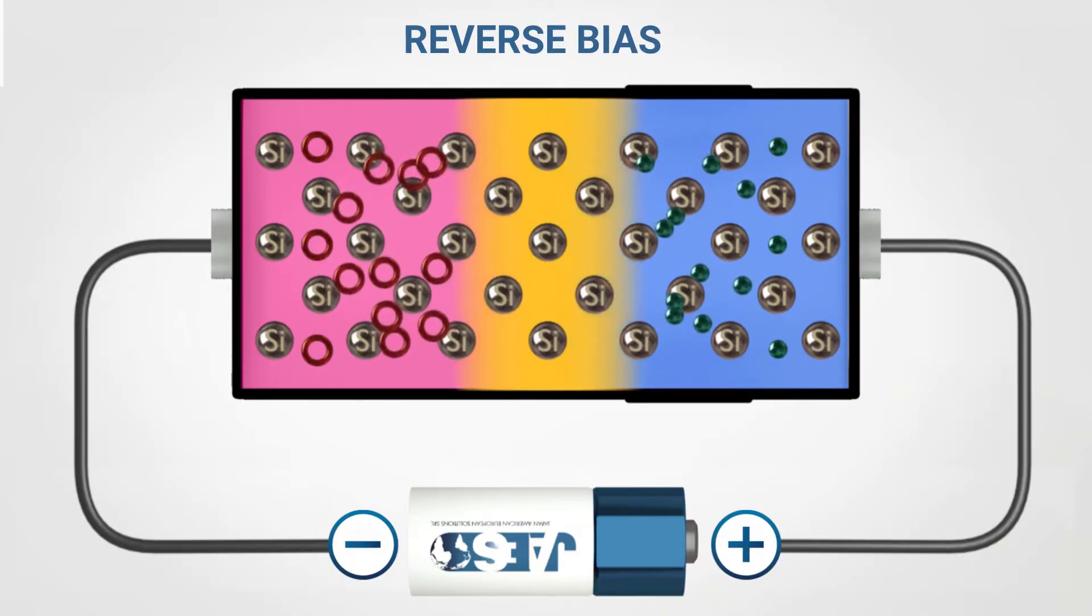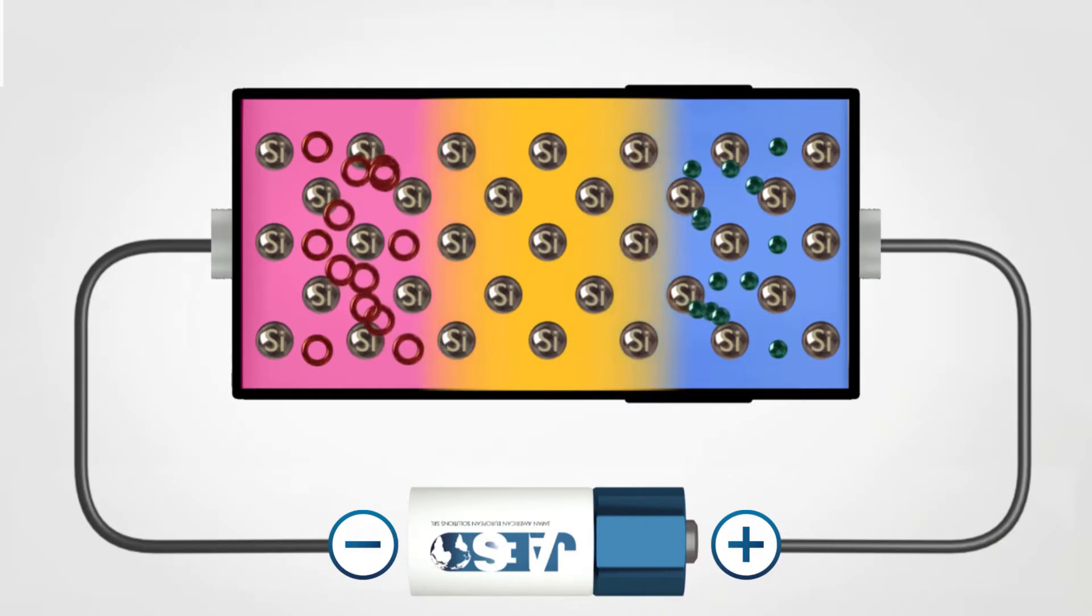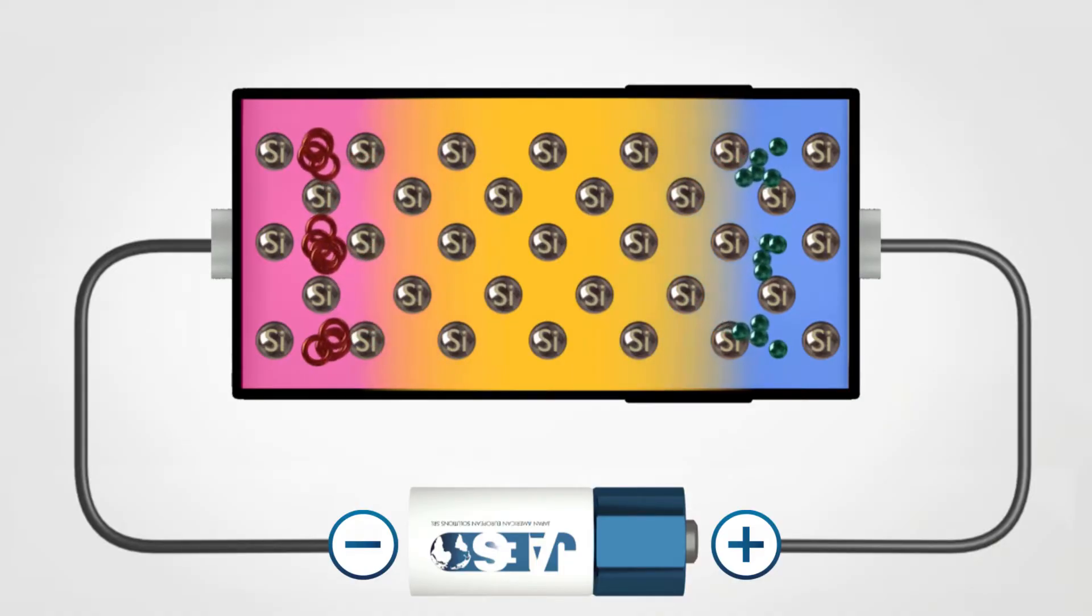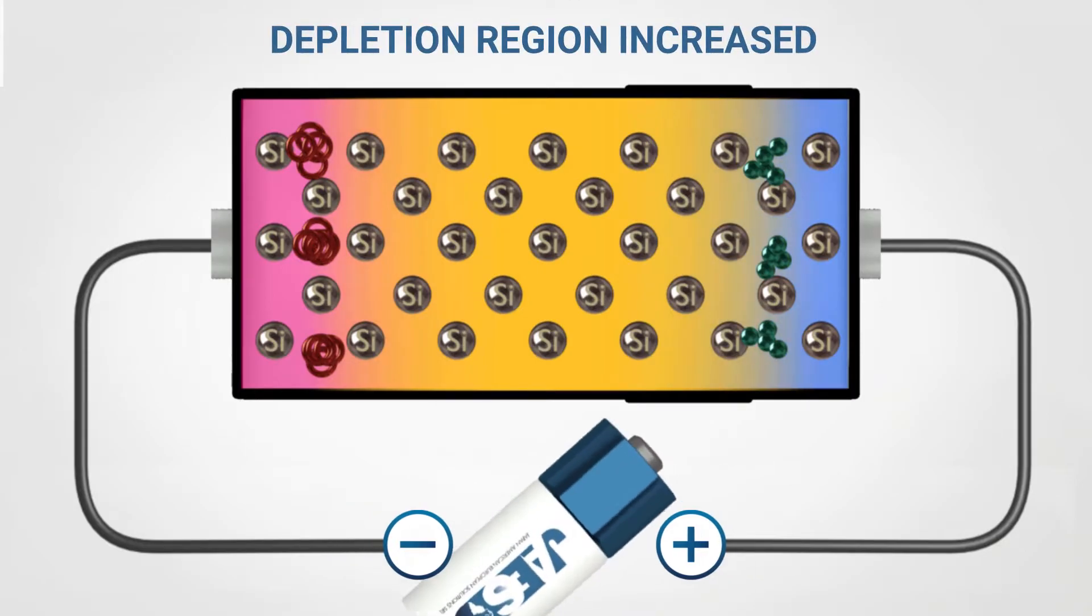The electrons and the holes are attracted in such a way to polarize the PN junction to increase the depletion region and, consequentially, prevent the flow of current. The effect of reverse polarization is to enlarge the depletion region.